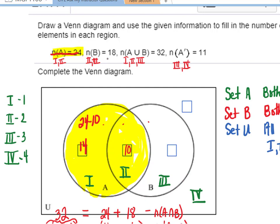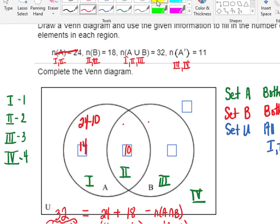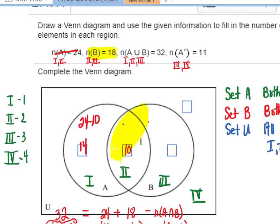Now let's move on to what we know about set B. For set B, we're told we have 18 elements all together. Now remember set B includes regions 2 and 3. If there are 18 total in set B and we've used 10 of them, that must leave 8 that are in region 3.